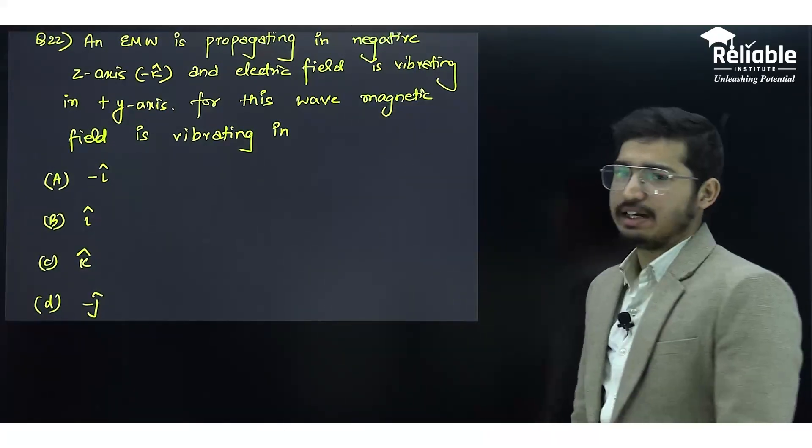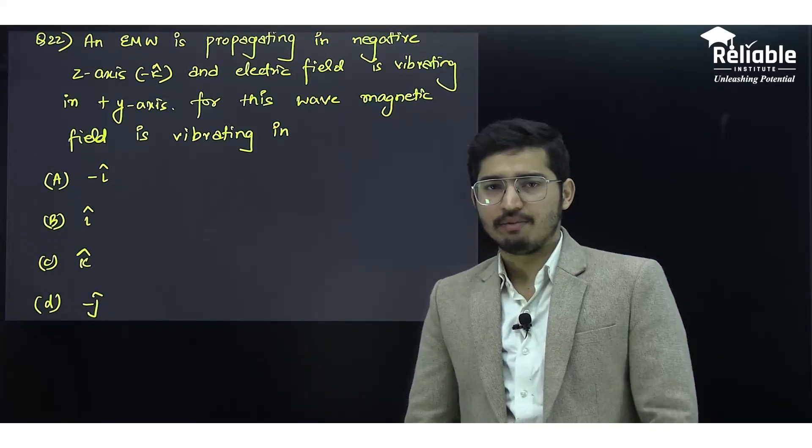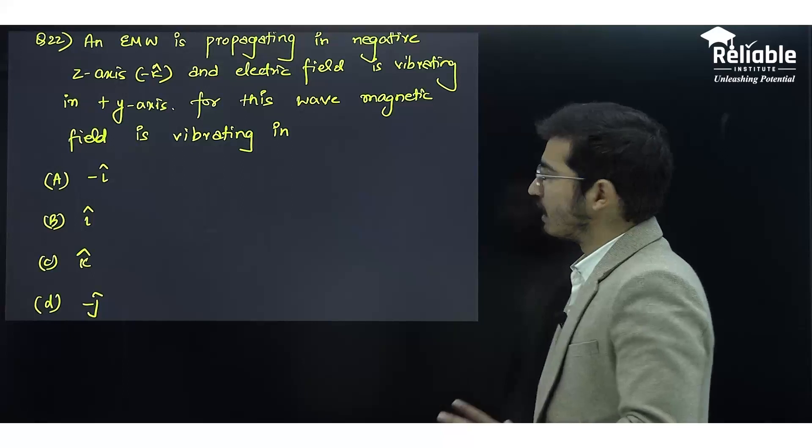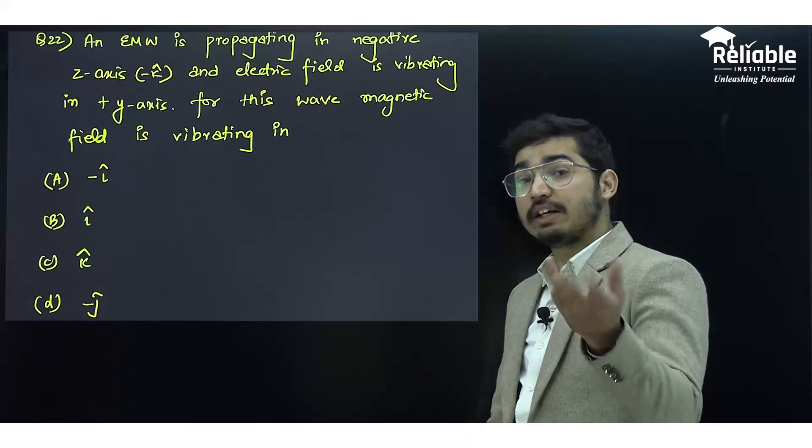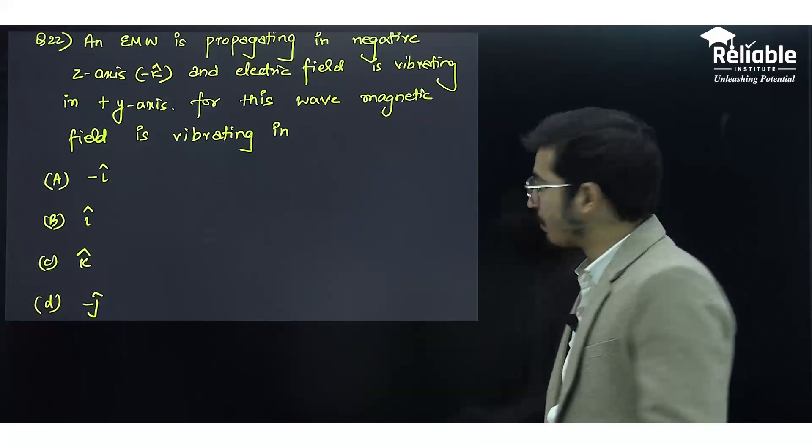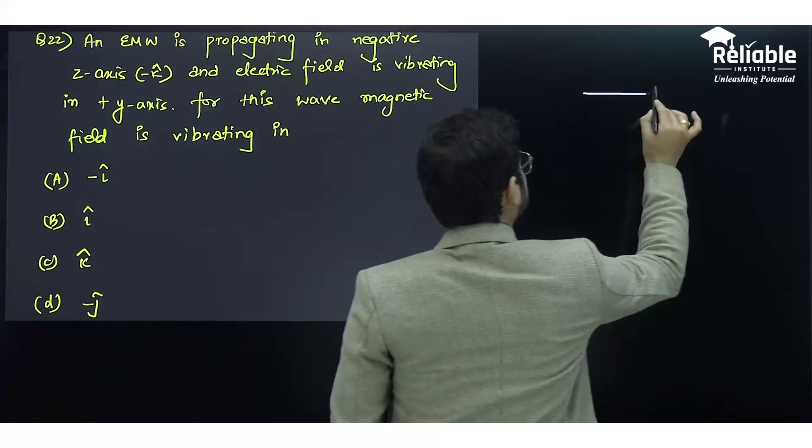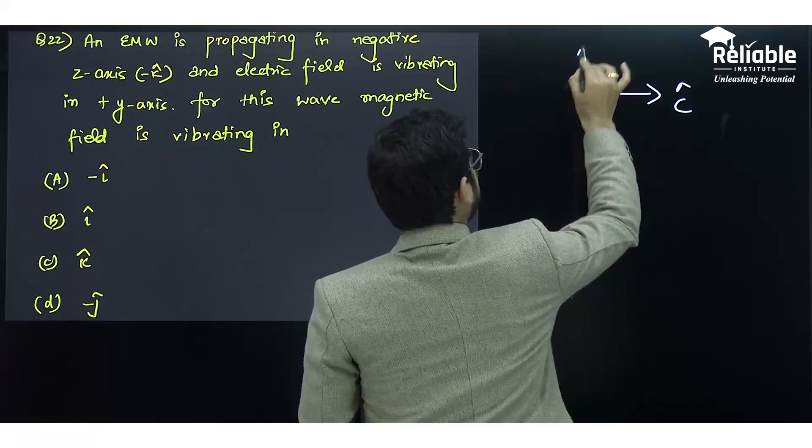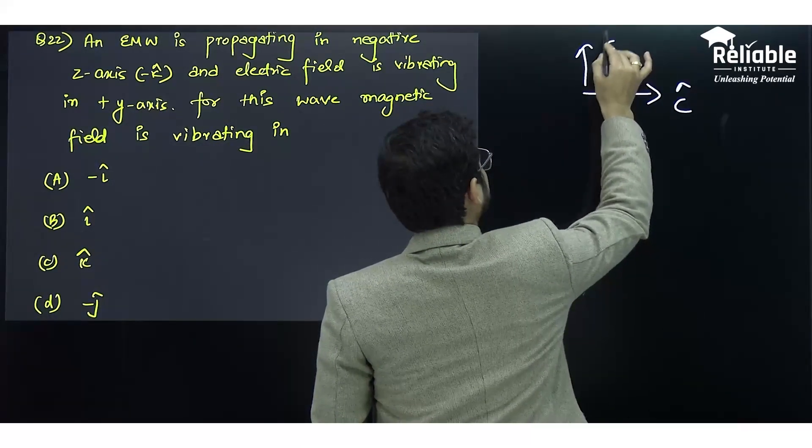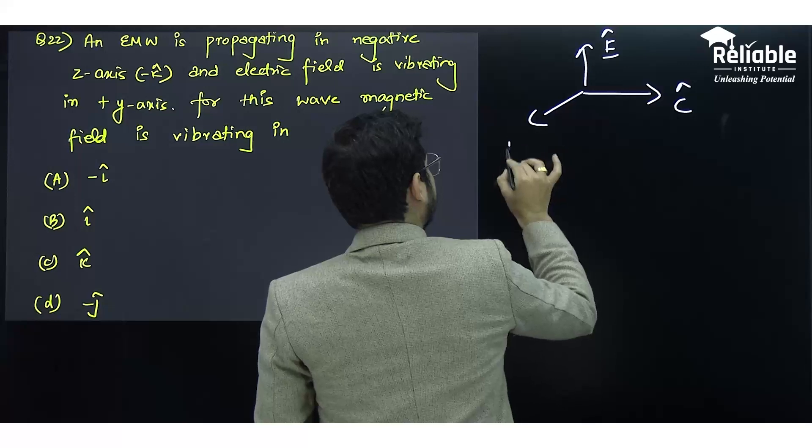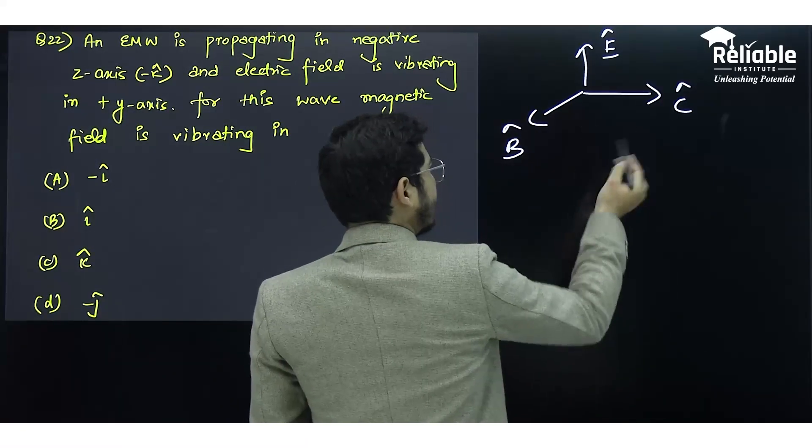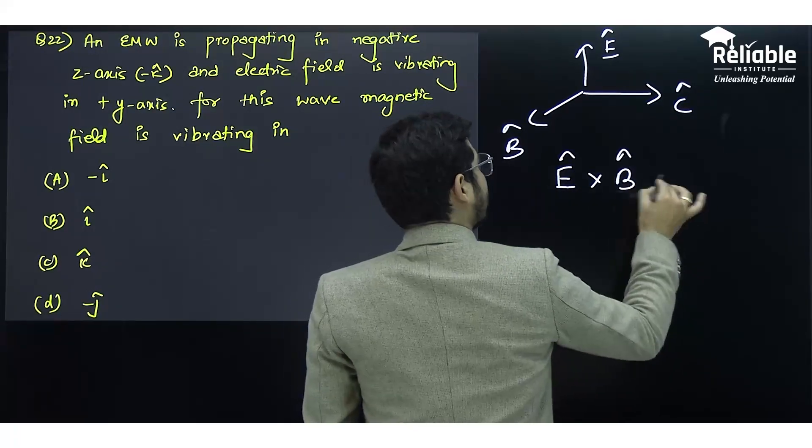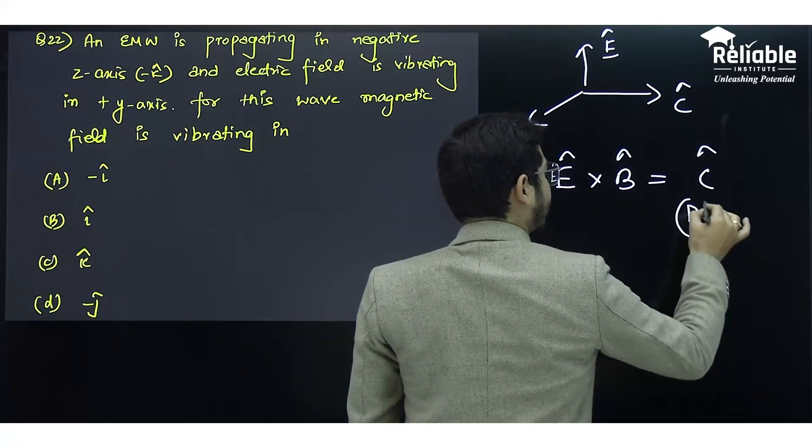The next question is from electromagnetic waves. We always tell you the weightage and importance of this chapter. This fundamental question is about calculating directions. Before starting, I'll cover the basics. If this is the propagation direction represented by ĉ, and this is the electric field Ê and magnetic field B̂, it is very easily understandable that Ê × B̂ will give us ĉ, which is the direction of propagation.